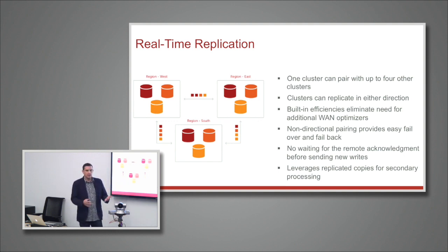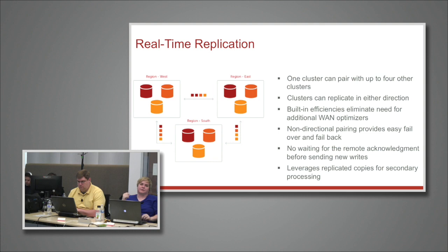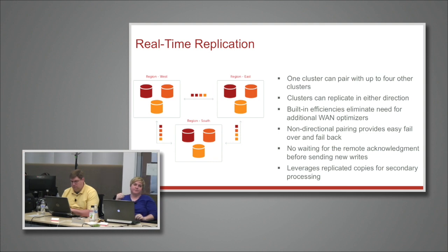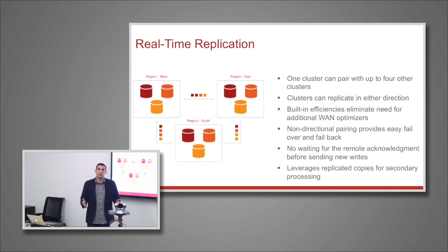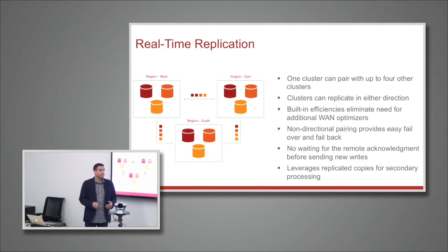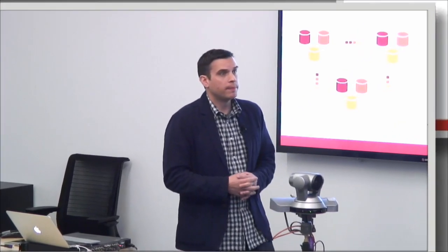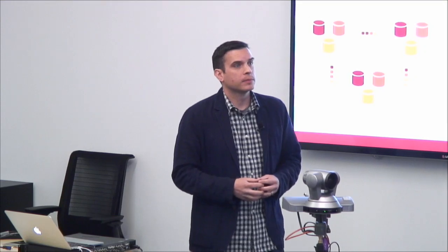All of the replication is defined on a per-volume basis, so that will generally be some particular application, data store, or tenant. You define: I'm going to replicate this to one of the other four environments in real time. This builds in a lot of efficiency — we've already got dedupe, compression, and thin provisioning, and we don't want to lose that doing massive scale over these pipes. There is no extra license whatsoever for this; it's all included with the product.